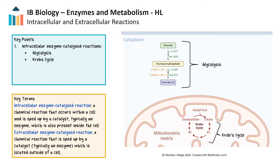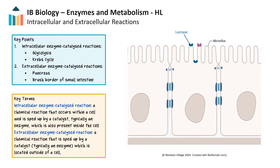The Krebs cycle, occurring in the matrix of the mitochondria, processes acetyl coenzyme A to generate molecules that transport electrons to the electron transport chain for ATP production. Extracellular enzyme-catalyzed reactions involve enzymes acting outside the cell. For example, enzymes in the digestive system break down food molecules in the gut, aiding nutrient absorption. These enzymes are produced within cells in the pancreas and excreted into glands, or exist in the cell membranes of the brush border of the small intestines.